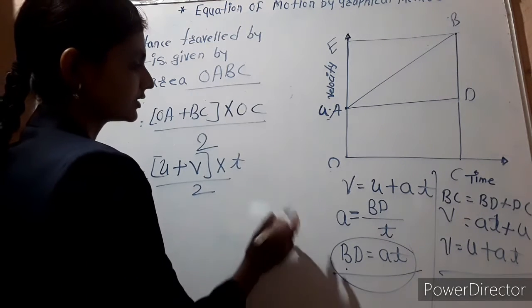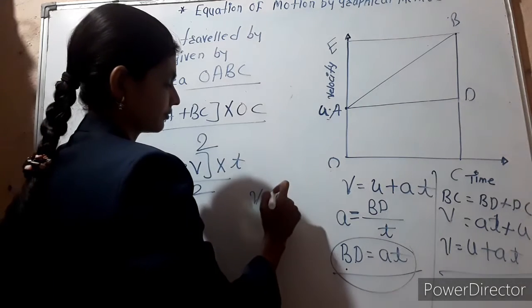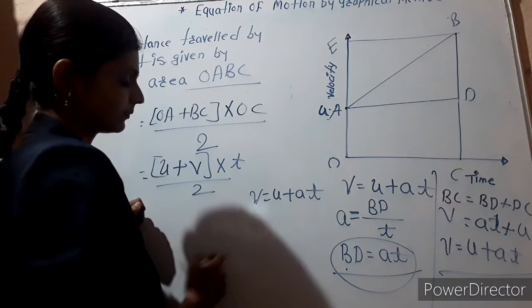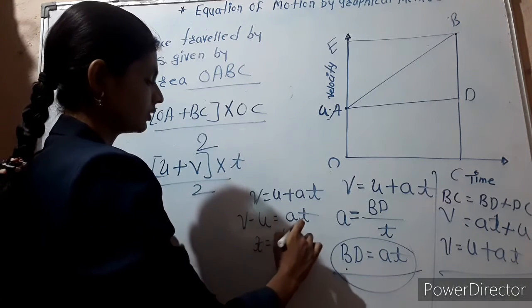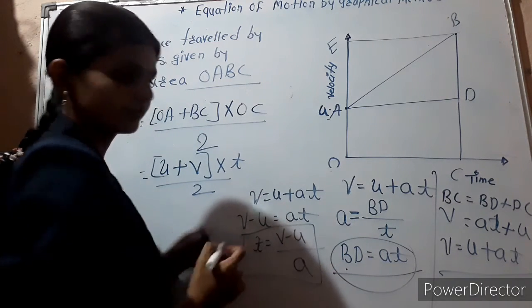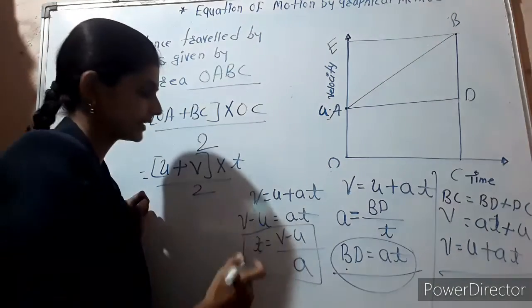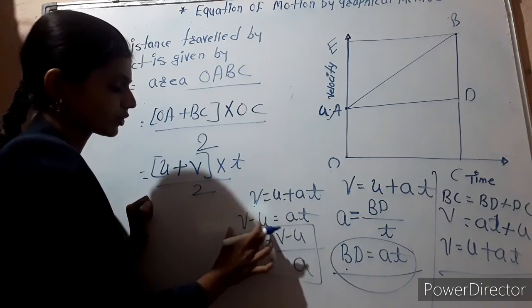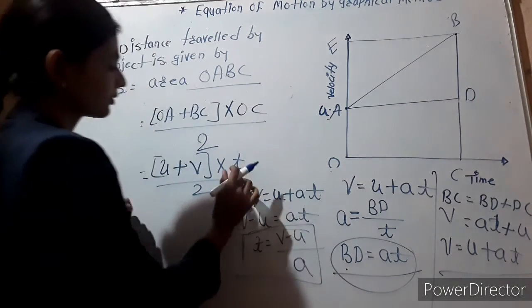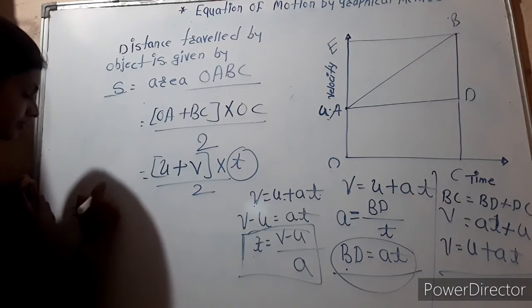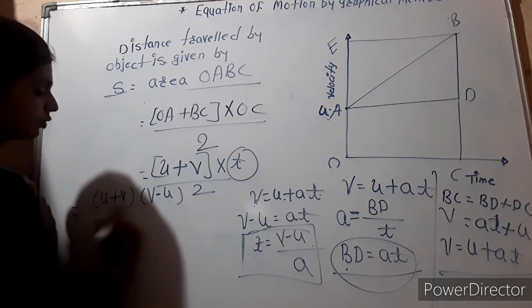We have one formula from the first law of motion: v is equal to u plus at. We can rearrange: v minus u is equal to at, so t is equal to v minus u upon a. We need to find the value of t so we can replace it in our equation. So t equals v minus u upon a, which gives us v minus u upon 2a when substituted.